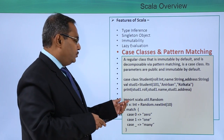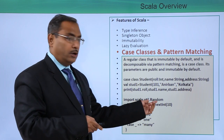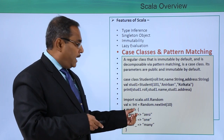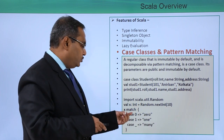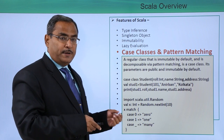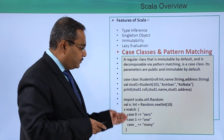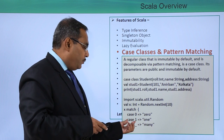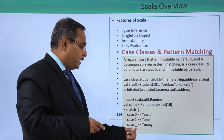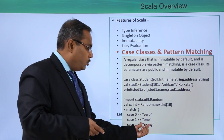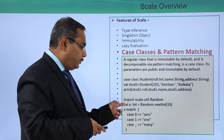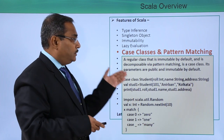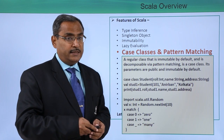For pattern matching, we import scala.util.Random and generate a random int: 'val x: Int = random.nextInt(10)'. Then using 'x match { case 0 => "zero"; case 1 => "one"; case _ => "many" }', we replace multiple if-else statements. Depending on the value of x, the respective string is selected. This is the feature of case classes and pattern matching.